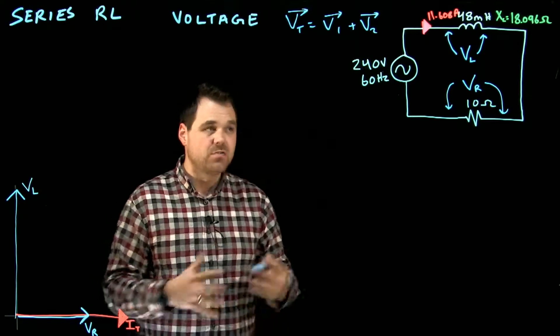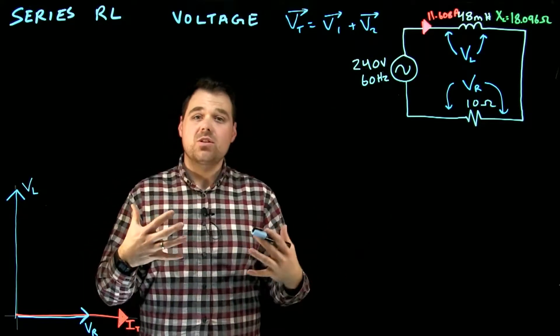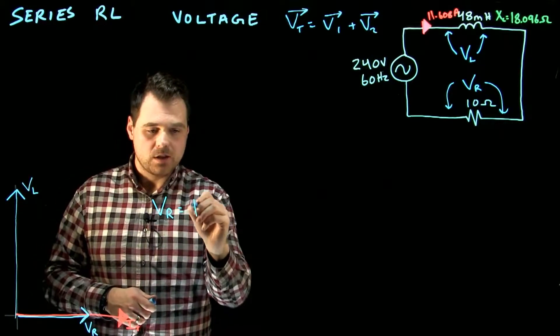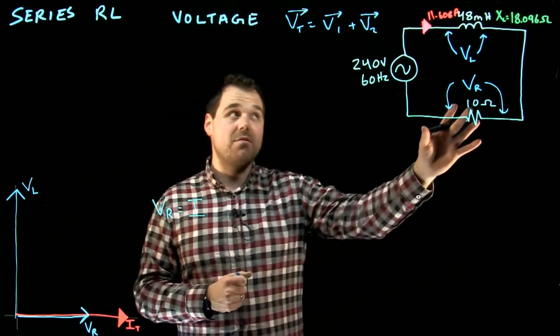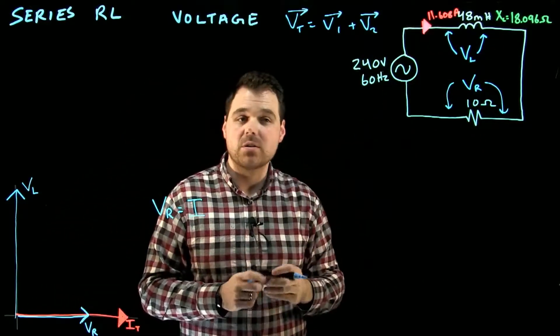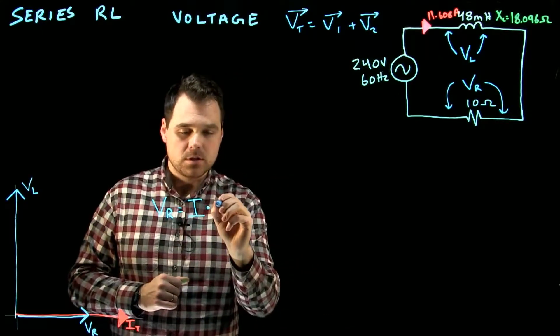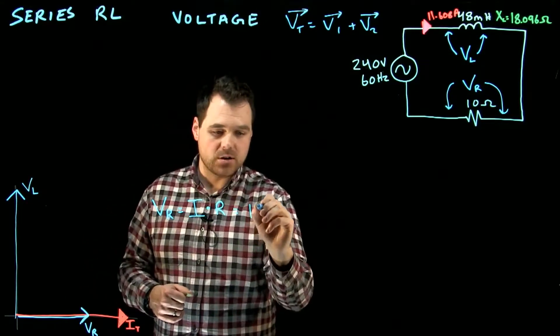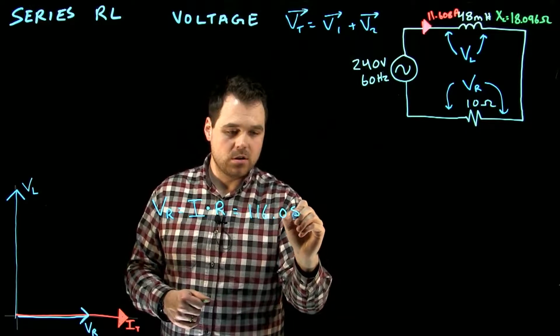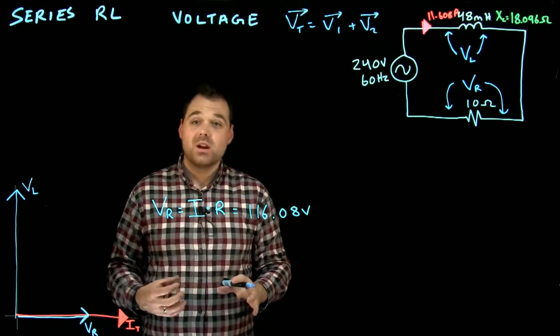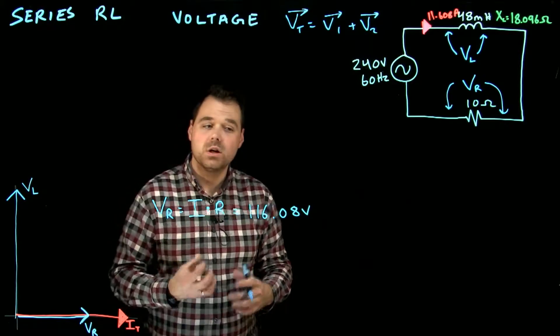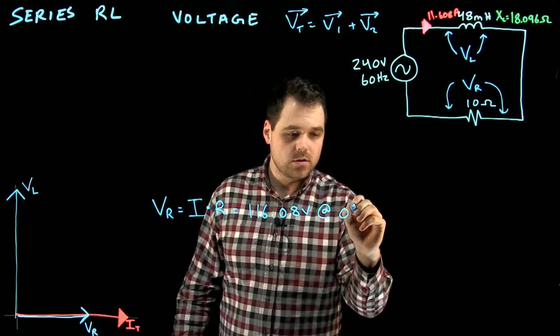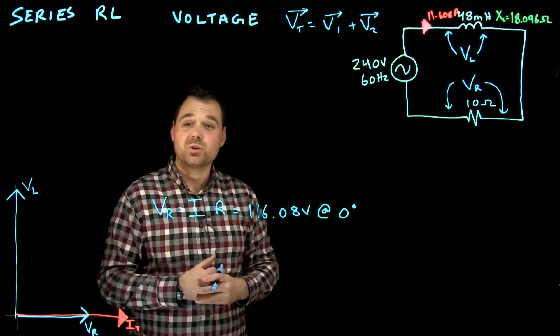So now what I want to do is I want to solve these voltages, right? Our standard Ohm's law voltages still apply. I can go, okay, voltage of my resistor is going to equal I. In this case, we want to make sure we're using the I flowing through the resistor, which is the I flowing everywhere, the current flowing everywhere because it's the same, times the resistance of the resistor. So this is going to give us about 116.08 volts. Now this 116.08 volts on our phasor diagram is actually at zero degrees. So that's the voltage across our resistor.